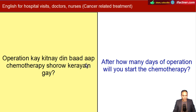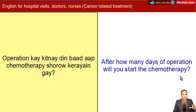Operation ki kitne din baad aap chemotherapy shuru karen ge? After how many days of operation will you start the chemotherapy? Doctor patient ko aur uske relatives ko ek plan batata hai ki operation ke baad itne chemo ke sessions honge, aur do week ke baad session hoga, ya des din ke baad hoga, ya teen weeks ke baad session hoga.